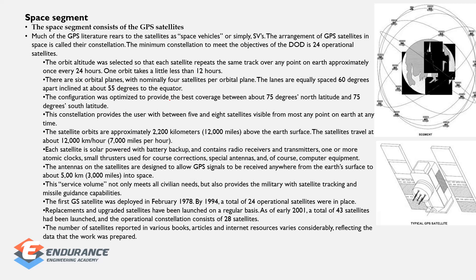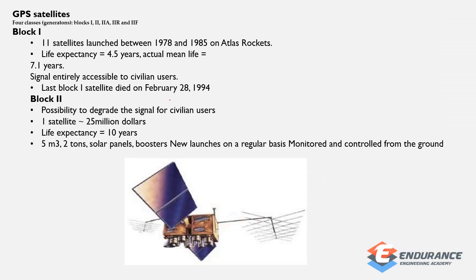The Space Segment consists of GPS satellites in orbit. One orbit takes less than two revolutions per day. The first GPS satellite was launched. The next block is Block 2. Each Block 2 satellite costs approximately 25 million dollars, and the life expectancy is 10 years.